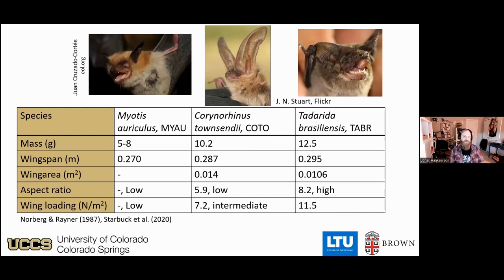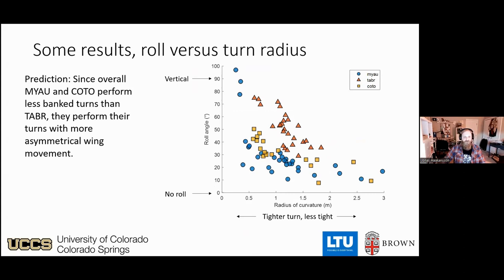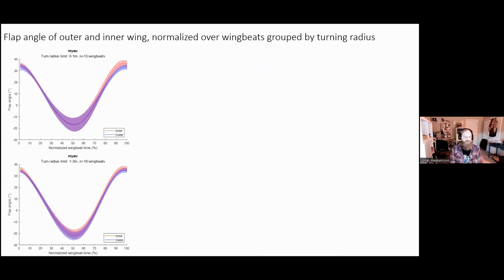Just to quickly remind us: Myotis auriculus — small, low aspect ratio, low wing loading; Corynorhinus townsendii — a little bigger, still low aspect ratio but wing loading going up; and Tadarida brasiliensis — a little bigger again, higher aspect ratio with more slender wings and higher wing loading. Those were our results along with my prediction. Let's now look at the wing movements.